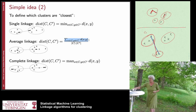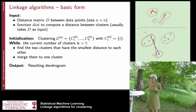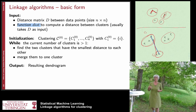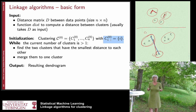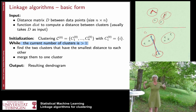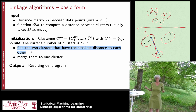The linkage algorithms proceed as follows. The input is simply a distance matrix between the data points, and a function dist that computes distance between two clusters — typically single, average, or complete linkage. You initialize clusters so that every cluster consists of exactly one data point. Then you run a while loop: starting with n clusters, you iterate until you have only one big cluster, finding the two closest clusters and merging them. Then you output the whole hierarchy.